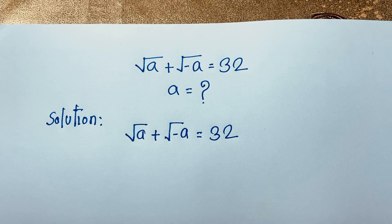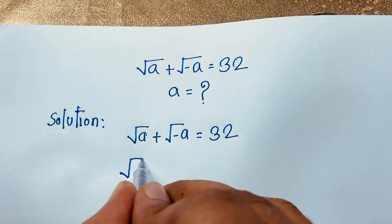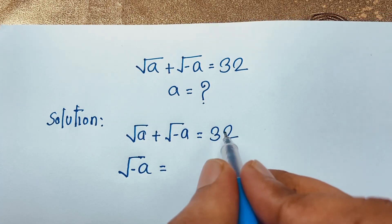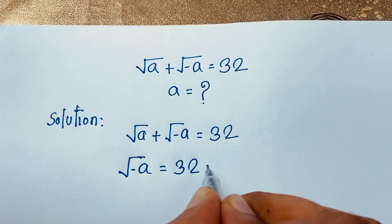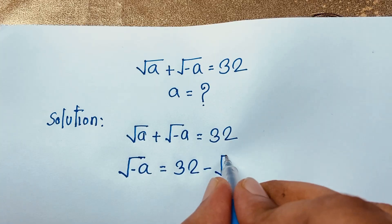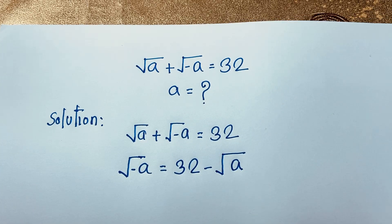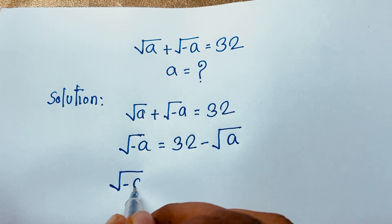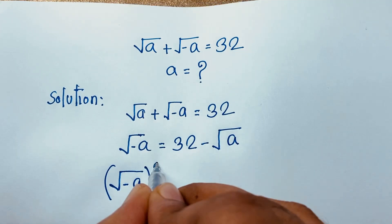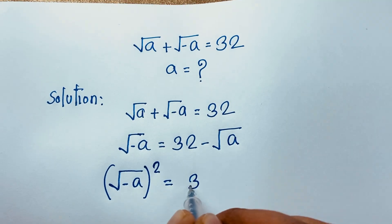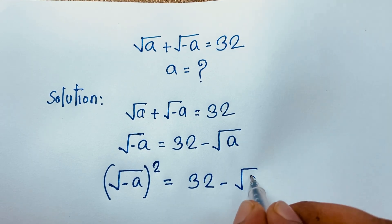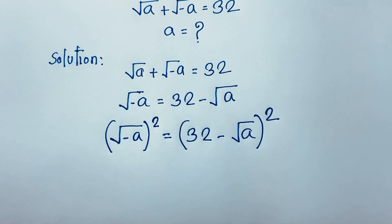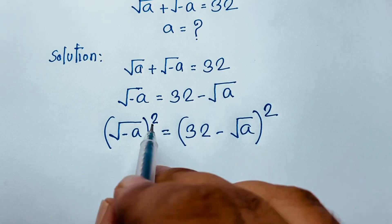So here we have square root of negative a. If I move this value to the other side, it will be negative, so 32 minus square root of a. Now I square both sides: square root of negative a, whole squared, is equal to 32 minus square root of a, whole squared.